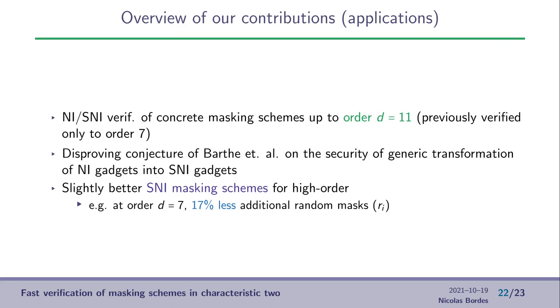With our tool, we were able to verify the NI and SNI property of concrete masking schemes up to order d equals 11, where it was previously verified only to order 7 and lower. We were also able to disprove a conjecture by Barthe et al. on the security of generic transformation of NI gadgets into SNI gadgets. In fact, this conjecture is correct until a given order, above which it is no longer correct. We also used our tool to design new masking schemes and to verify them straight away. And thanks to that, we are able to have masking schemes at order d equals 7, which take 17% less additional random masks.